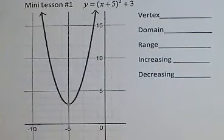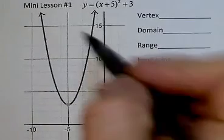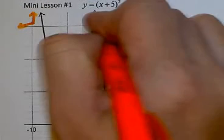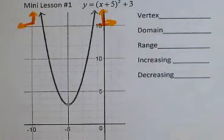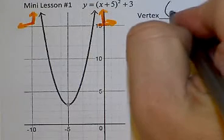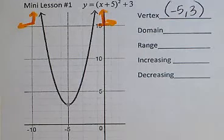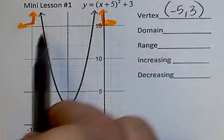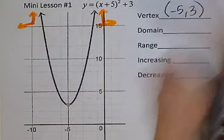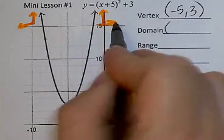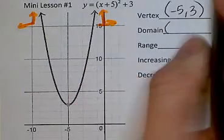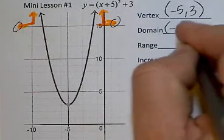Last practice problem for this mini lesson. Again, we're being pulled to the left as it goes up, and to the right as it goes up. So the vertex for this problem is (-5, 3). And there's no limit how far it goes to the right or to the left. Represented with a negative infinity and a positive.